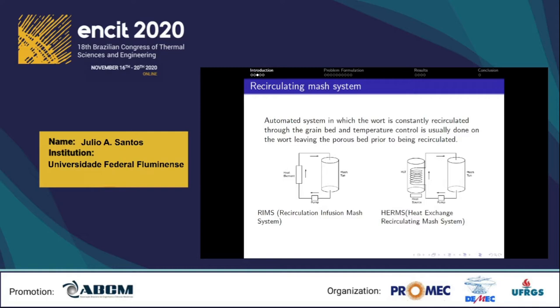There are two main ways to heat the wort, both using a pump for recirculation. The RIMS — Recirculation Infusion Mash System — recirculates the wort over an electric heating element. The heat element can be electric or gas; it uses direct heat on the tube, and the pump recirculates to keep the entire flow heated and avoid scorching the wort. The HERMS — Heat Exchange Recirculating Mash System — recirculates the wort through a heat exchanger, usually in the form of a coiled metal tube inside a vessel of hot water, the hot liquor tun.